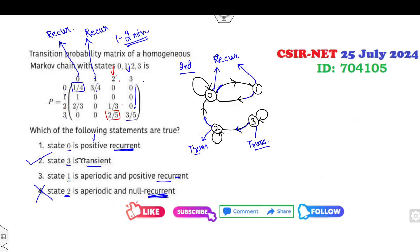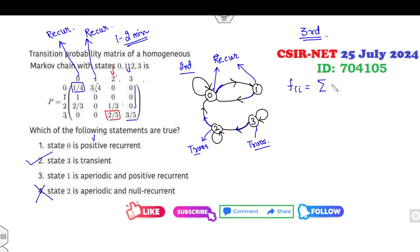Method 3: compute the probability of returning, f_ii(n). If the sum of f_ii(n) over all n equals 1, the state is recurrent; if it is less than 1, the state is transient.